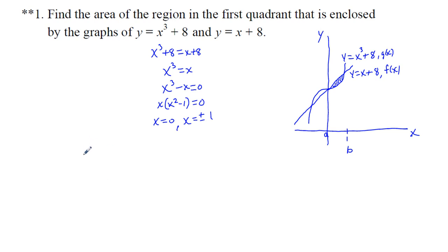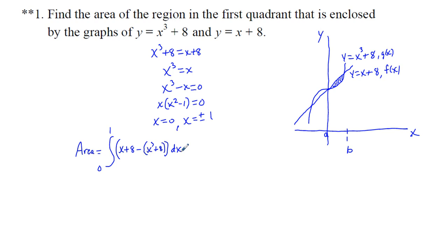So now let's set that up. Area is equal to the integral from 0 to 1 of f of x — that's going to be x plus 8 — minus g of x, which is going to be x cubed plus 8, dx. To simplify, the 8 minus 8 will cancel each other. So we're going to have the area equals the integral from 0 to 1 of x minus x cubed, dx.